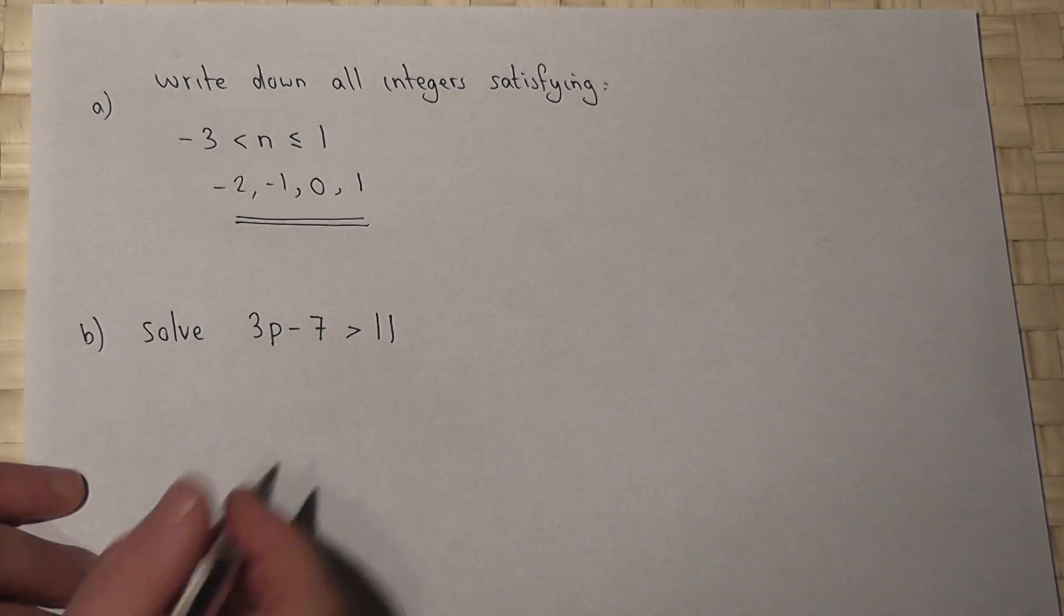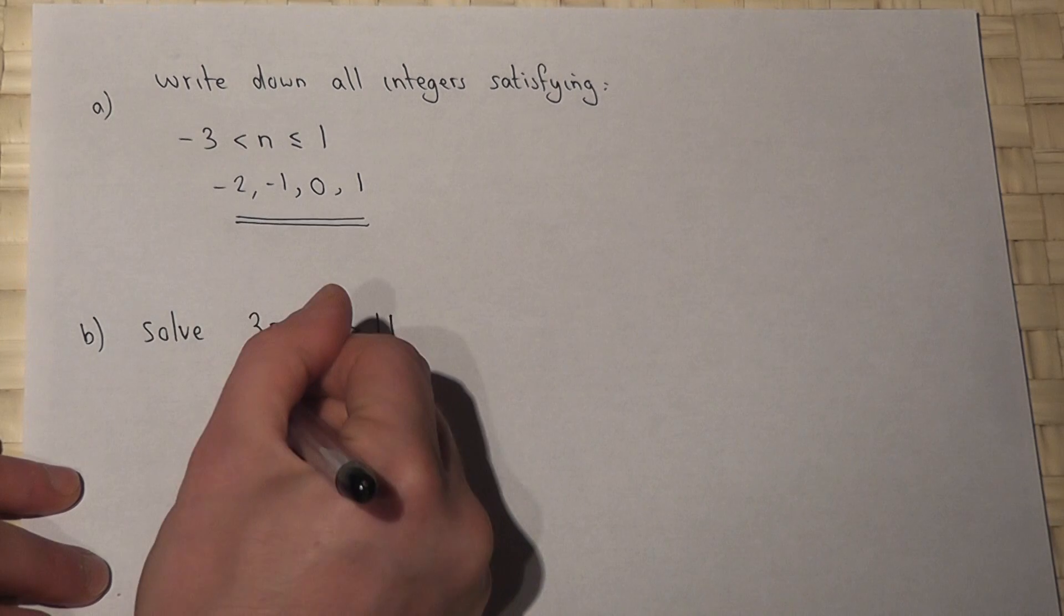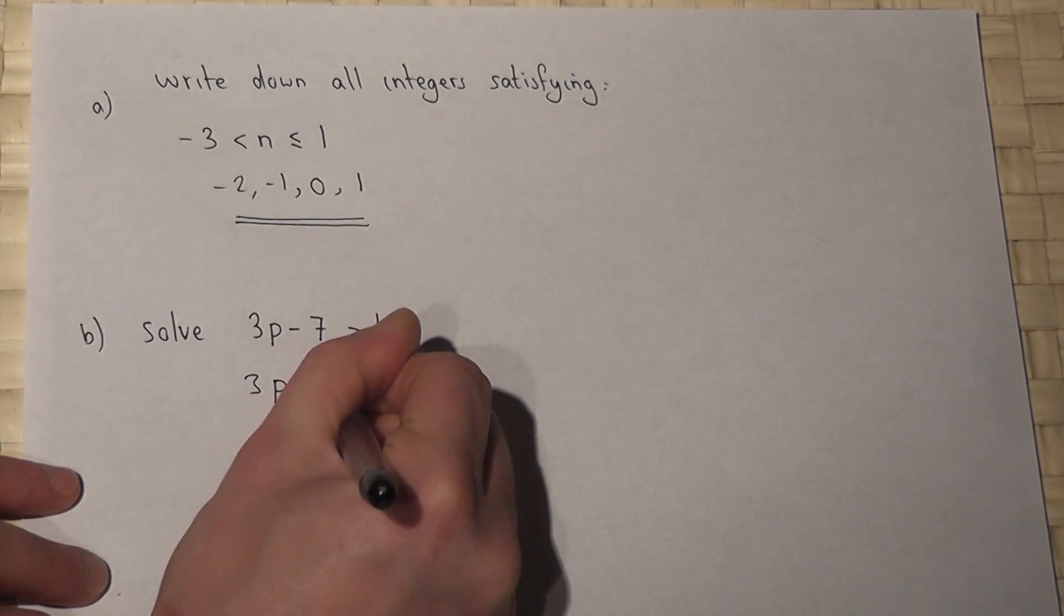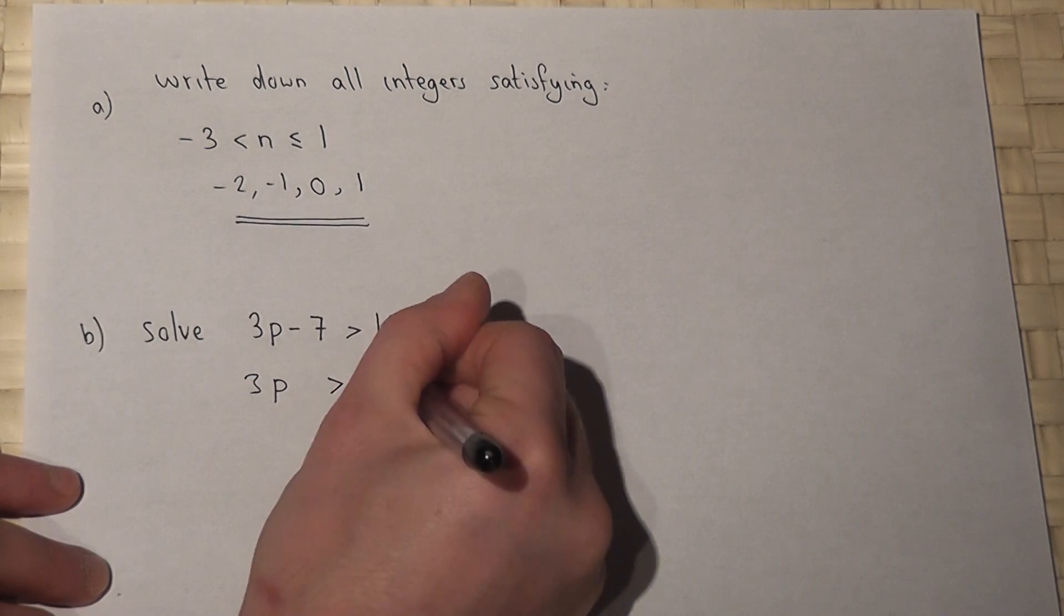So with a minus 7, I must add 7 to the other side. So 3p is greater than, we maintain the symbol, 11 plus 7, which is 18.